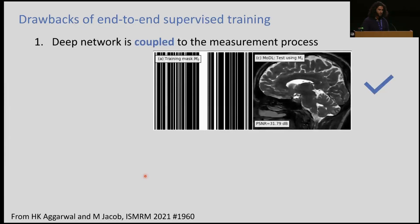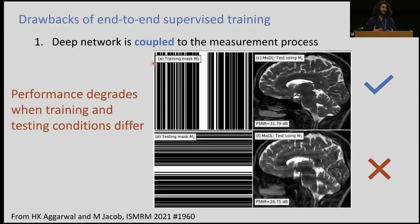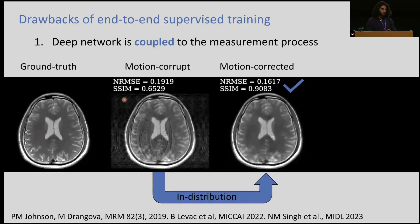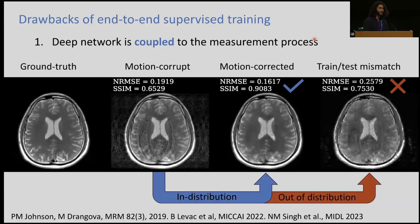I'm going to talk about the drawbacks of end-to-end supervised training and why we're looking for a different way of creating a foundation model for MRI. One issue is that the deep network is coupled to the measurement process — an advantage if we know what the measurement process will be, but a problem otherwise. This is some work out of Iowa that trained an MODL end-to-end network on a particular sampling pattern. But if the sampling pattern changes at test time, the network result will degrade because it hasn't seen this kind of distribution shift at training time.